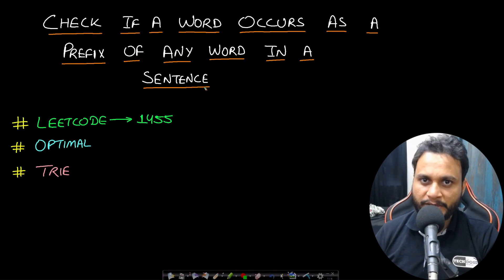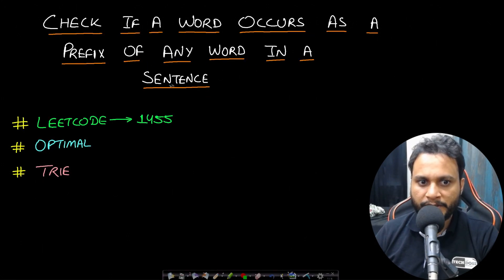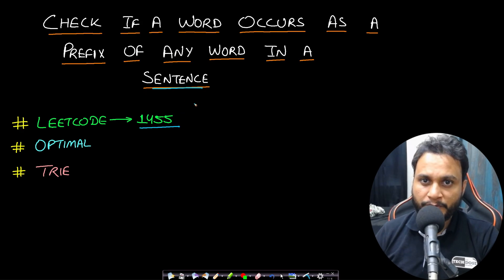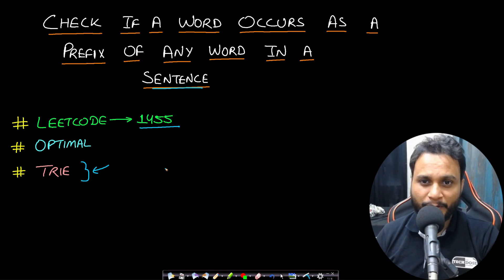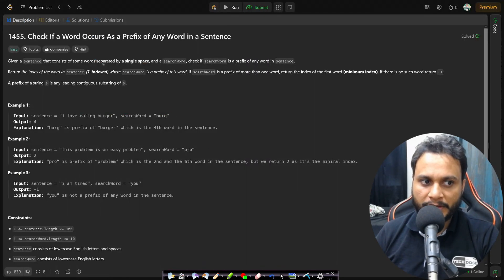Hello guys, welcome back to Tech Dose. In this video, we will look at 'Check if a Word Occurs as a Prefix of Any Word in a Sentence,' which is LeetCode number 1455. A prerequisite before watching this is to watch my video on Trie, so the link for this will be in the info button and also in the description below. This is a very good problem to get started with Trie.